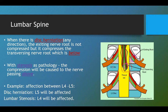So in disc herniation, as you can see from the picture, the disc compresses the traversing nerve root — the L5 nerve root below will be affected. In stenosis, the compression occurs at the level above, meaning the exiting nerve root is affected because of the compression and closing of the foramina.